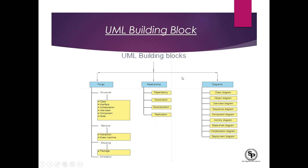The third building block is diagrams. Diagrams are of nine types: class diagram, object diagram, use case diagram, sequence diagram, component diagram, activity diagram, state chart diagram, collaboration diagram, and deployment diagram.